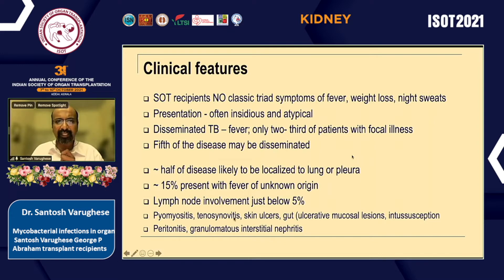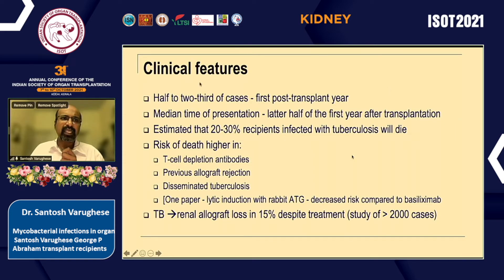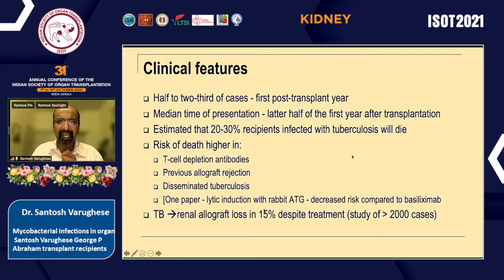Rarer presentations we have reported include pyomyositis, tenosynovitis, skin ulcers, intussusception, and granulomatous interstitial nephritis. Our institutional data shows tuberculosis is in the lung or pleura in just under half of cases, about 20 percent is disseminated, and about 15 percent presents as PUO. About half to two-thirds occur in the first post-transplant year. Risk of death is associated with T-cell-depleting antibodies, rejection, or disseminated tuberculosis. Renal allograft loss is 15 percent despite treatment, as shown in a study of more than 2,000 cases.